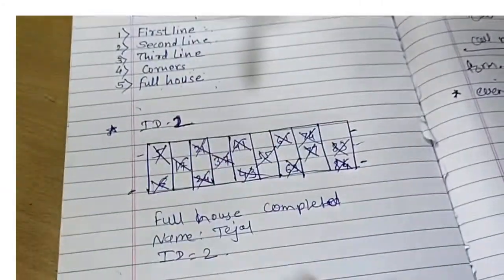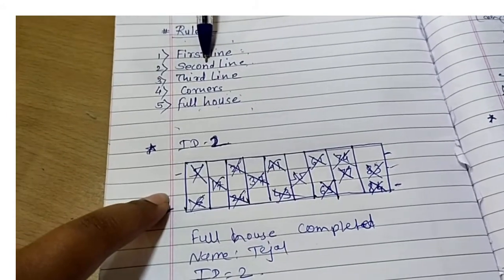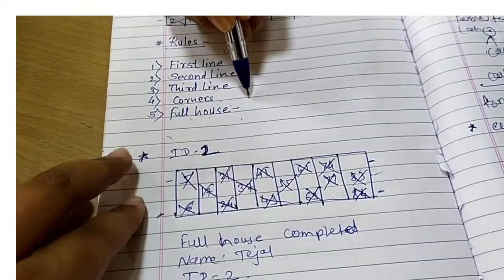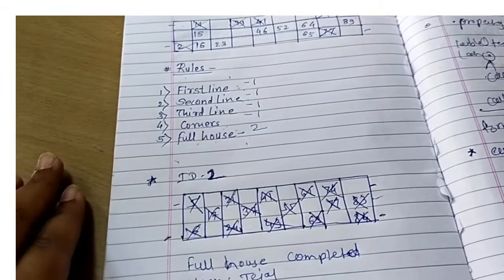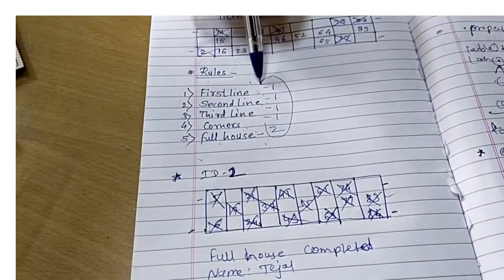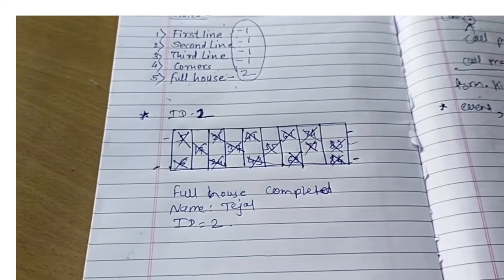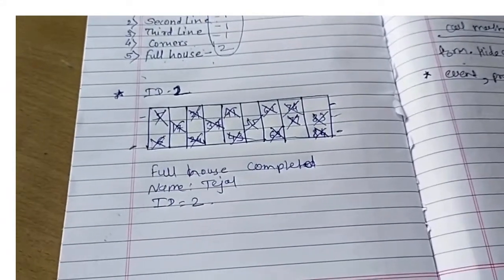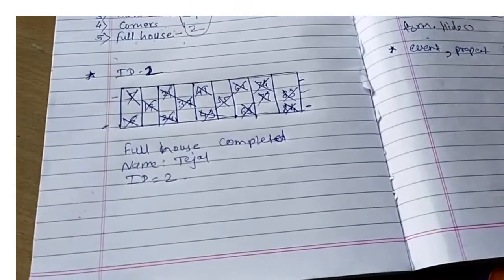Each line and corners and full house is having some points. First line completed gives one point, second line one point, third line one point, corners is one point, and for full house it's two points. These are the markings of the Tambola game. Whosoever is completing the maximum will be the first winner. Hope you have understood how to play the Tambola game. The number calling will be done tomorrow on the 2nd of January 2021. We will be posting the video in the morning at around 10 to 10:30, and you have to post the images till 2 o'clock only.